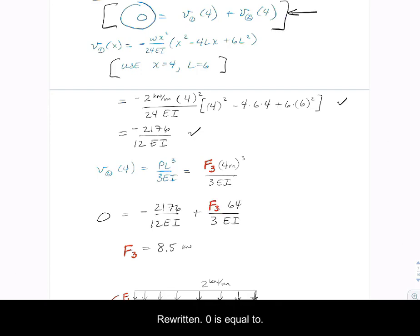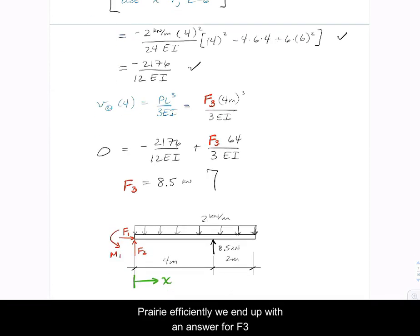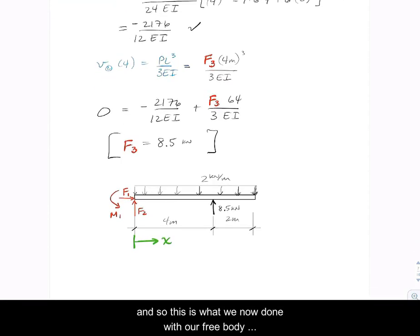So now our compatibility equation, which is sitting right there, can now be rewritten that zero is equal to the deflection in structure one at four, which we've calculated, plus the deflection in structure two at four. And so very efficiently we end up with an answer for F3.